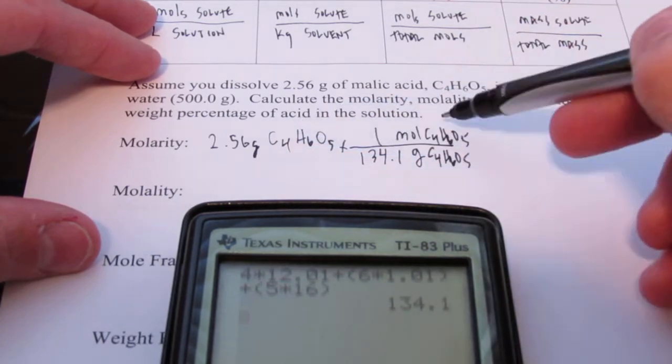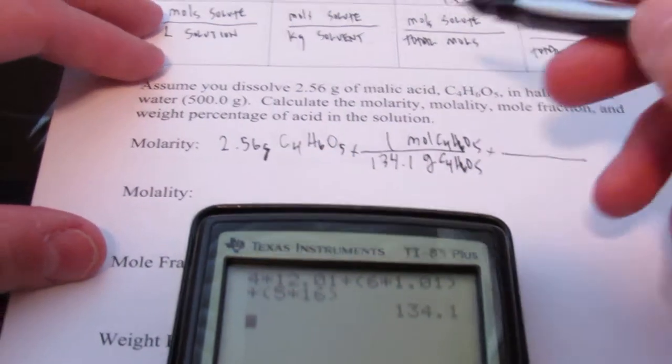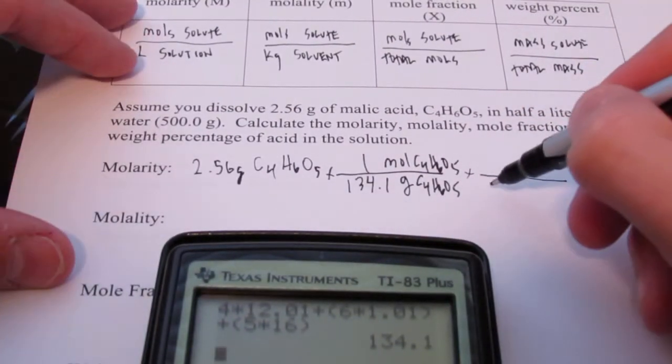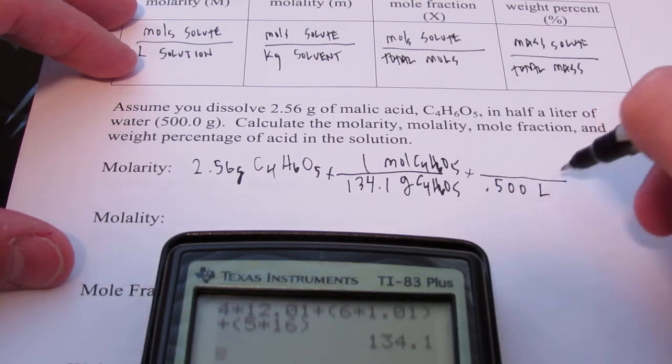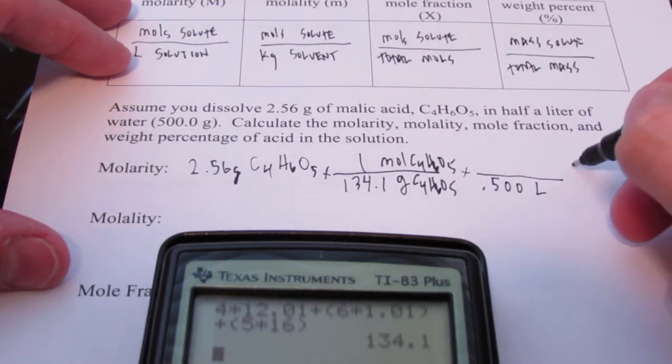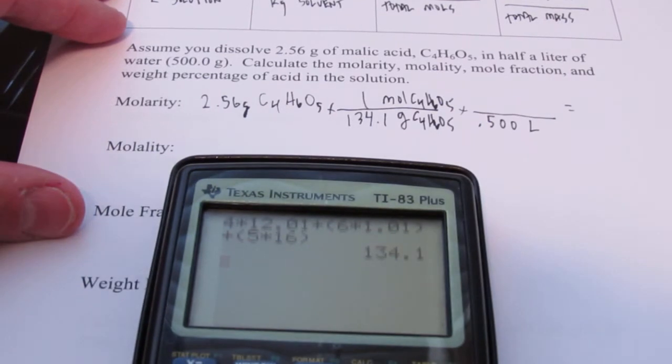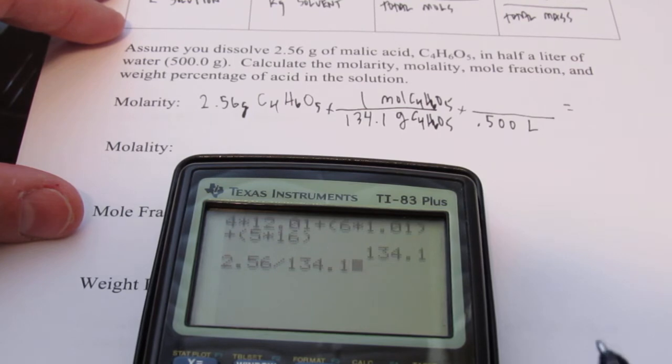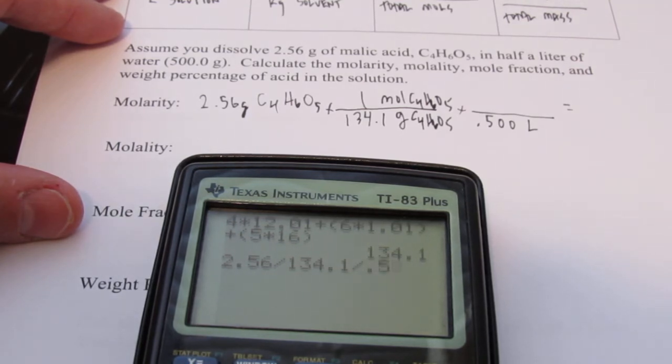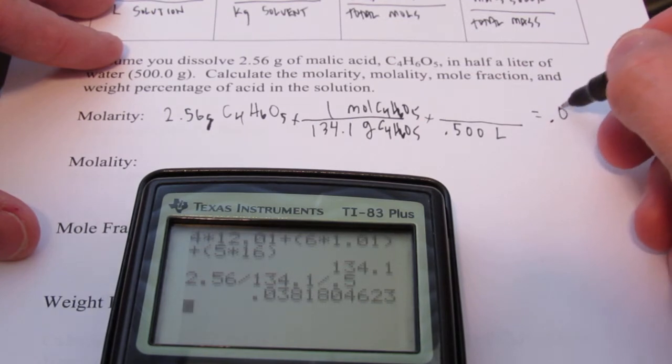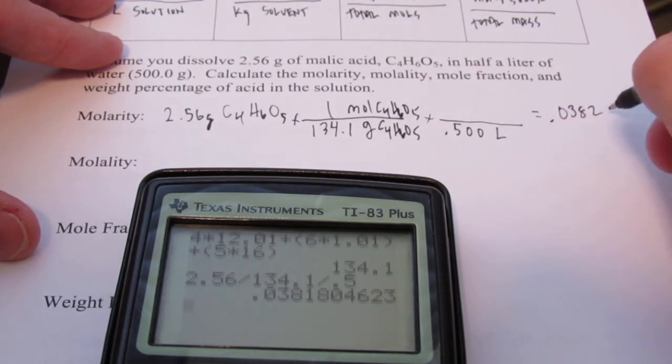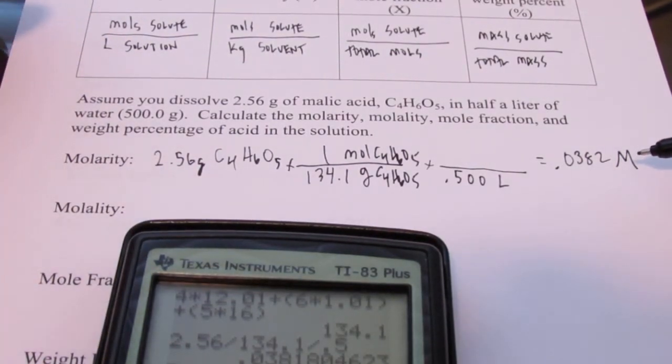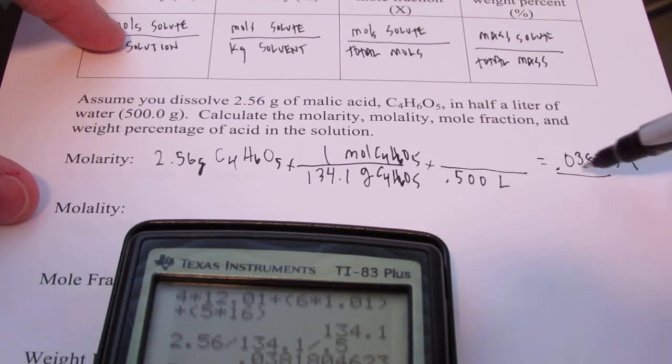Now we've gone from grams to moles of malic acid. And we need to divide by liters of solution. Now I have a half of a liter. So I'm going to divide by 0.500. We'll assume 3 sig figs in that volume. Liters. So let's plug and chug and see what we get. 2.56 divided by 134.1 divided by 0.500 liters. And to 3 significant figures I get 0.0382 molar. So the symbol for molarity kiddos is the uppercase M. Alright? So that would be the molarity of that solution.